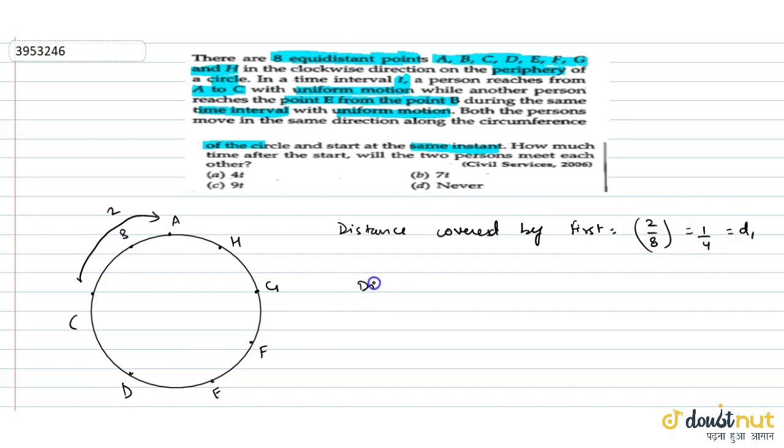Then distance covered by second. Toh ye khaas hai B se E tak paonch gaya toh B aur E ki beech mein kitna gap hai? 3 rounds ka. Toh ye hoga 3 by 8 ke equal और इसको हम D2 ले रहे हैं.